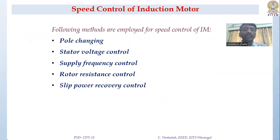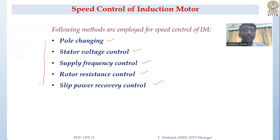The different types of speed control methods of induction motor are: pole changing method, stator voltage control, supply frequency control, rotor resistance control, and slip power recovery control. We'll discuss these five types of speed control.